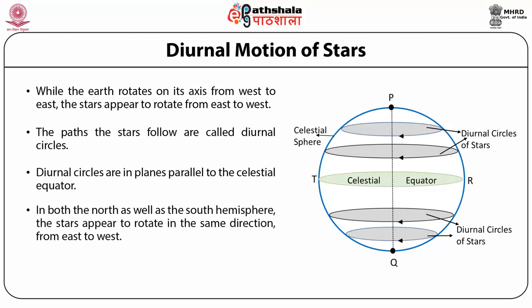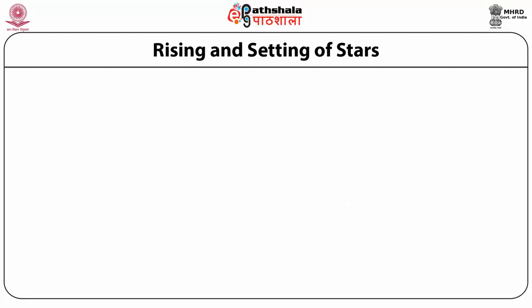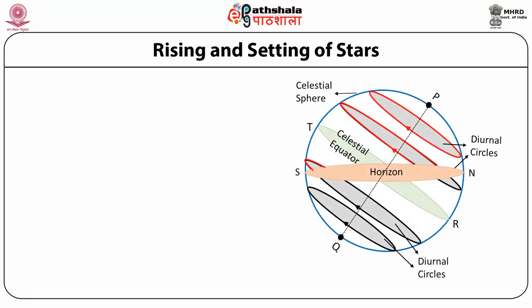In both the northern and southern hemispheres, the stars appear to rotate in the same direction from east to west. Looking up, we see stars and other celestial objects rotating clockwise. The horizon of an observer in the northern hemisphere at some latitude is shown in the picture. Celestial objects above the horizon are visible; those below are not. The diurnal circles of stars are shown, with the part above the horizon marked in red and the part below marked in black.